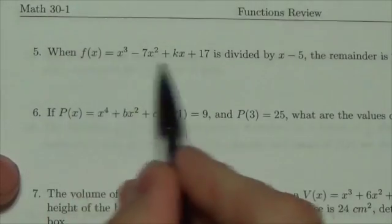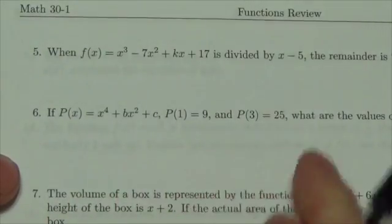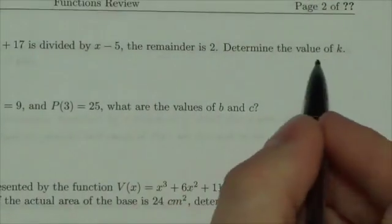It says, when f(x), and let me give you the function right there, is divided by x minus 5, the remainder is 2. We're going to determine the value of k.